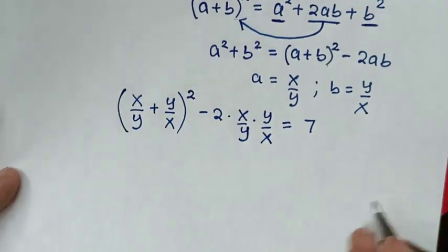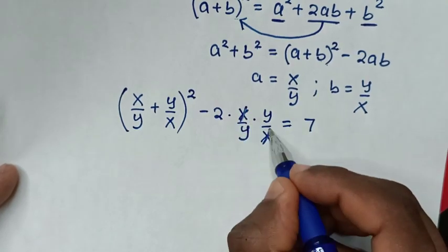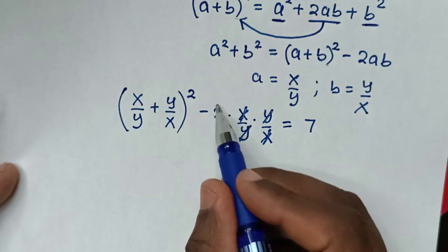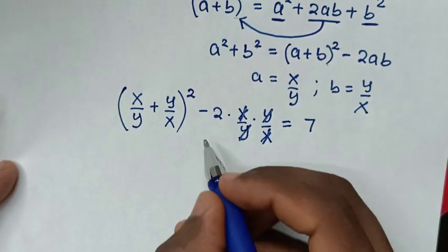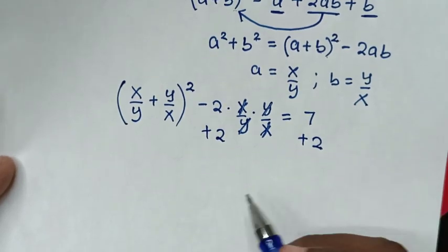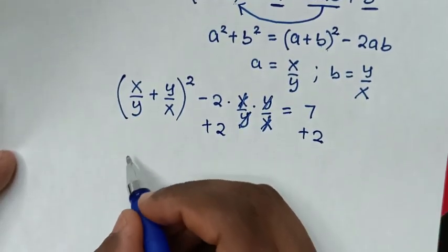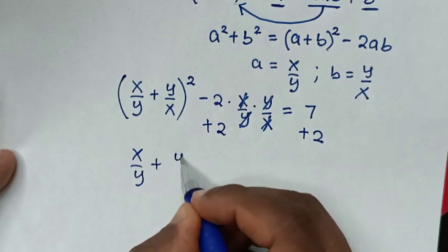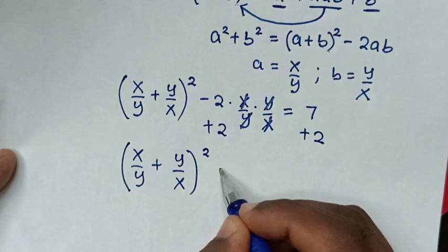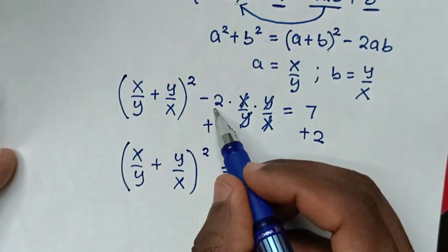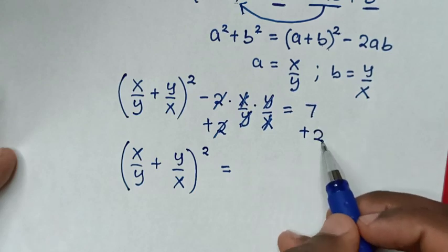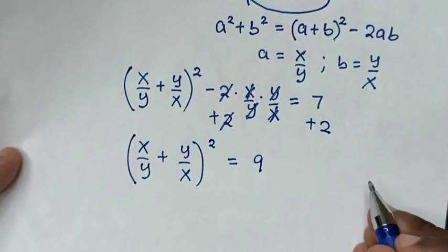In the next step, we simplify. This x will cancel this x and this y will cancel this y. Then the negative 2 — we'll take to this side, so we'll add 2 to both sides. It will be (x/y + y/x)² equals — because negative 2 plus 2 is 0, it cancels — then 7 plus 2 is 9.